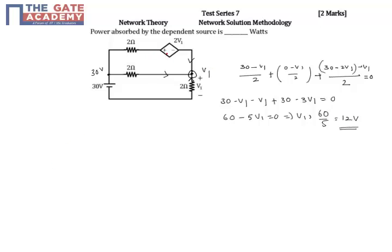So once you find v1, you can find out the current also. You can take any direction since anyway you are taking the direction is like this. So the current through this is nothing but this voltage minus this voltage minus this voltage by this one.